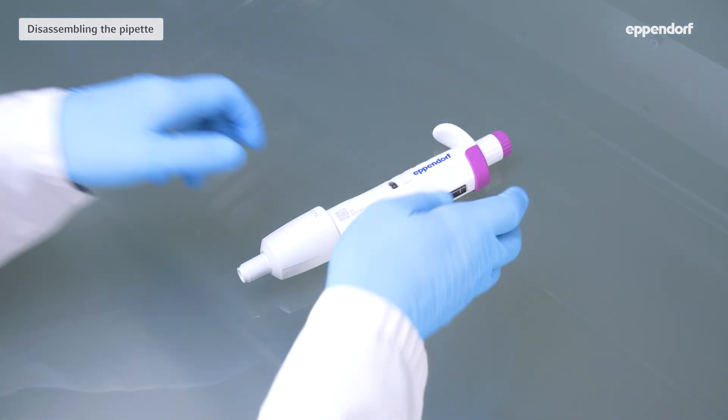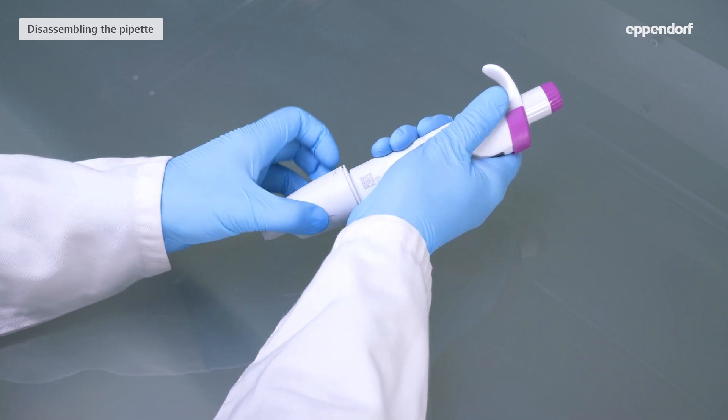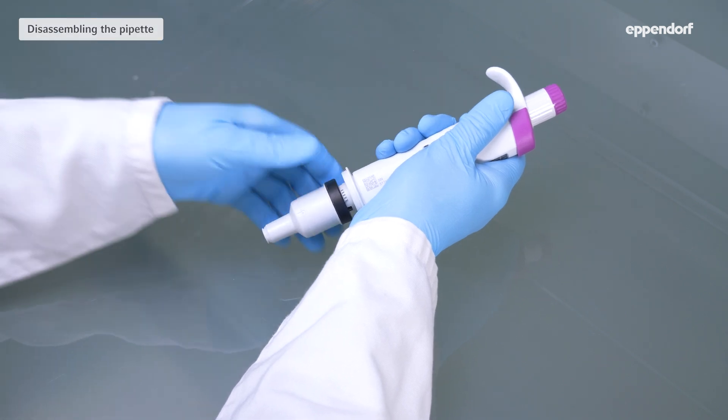For large volume pipettes with 2, 5, or 10 milliliters, unscrew the ejector sleeve before pushing the ejector button and turning the lower part 30 degrees to the right to loosen it.